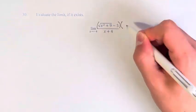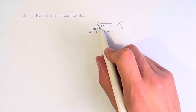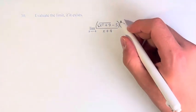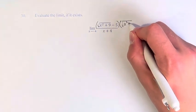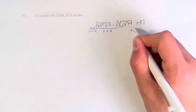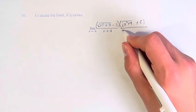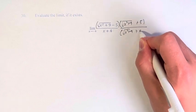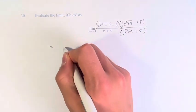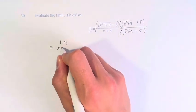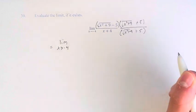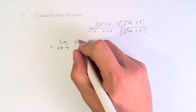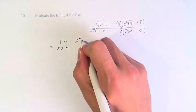To do that, we're going to rationalize the numerator. We have the square root of x squared plus 9 minus 5, so we multiply it by the square root of x squared plus 9 plus 5. And of course, you have to multiply the denominator by the same thing. On top, what you're going to have is the square root of x squared plus 9 times the square root of x squared plus 9, which is just x squared plus 9.